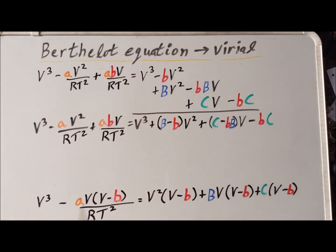Now, if we collect on the right-hand side the appropriate powers of V and collect the coefficients, we get V cubed plus big B minus little B times V squared plus C minus little B, big B times V minus BC. And we know that this is equal to our expression on the left-hand side.